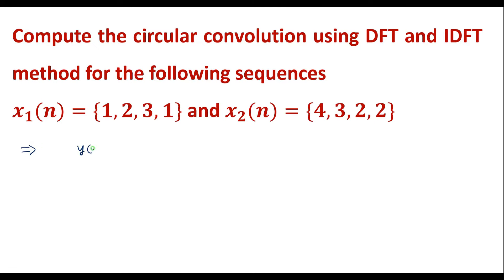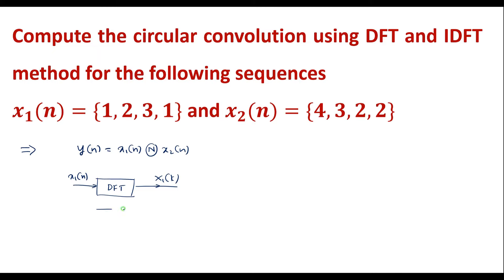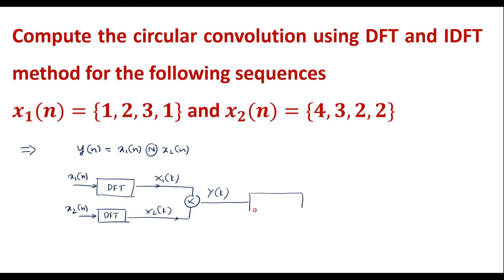We know that y of n is equal to x1 of n circularly convolved with x2 of n. In the DFT-IDFT method, first we compute the DFT of x1 of n, represented as X1 of k. Then we compute the DFT of x2 of n, called X2 of k. Then we multiply these two sequences; the resultant sequence is Y of k. Then we take the IDFT of Y of k to get y of n, which is the circular convolution between x1 of n and x2 of n.